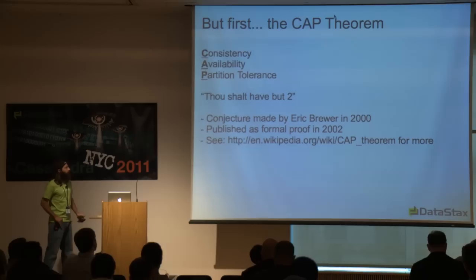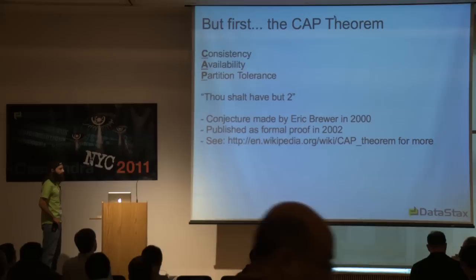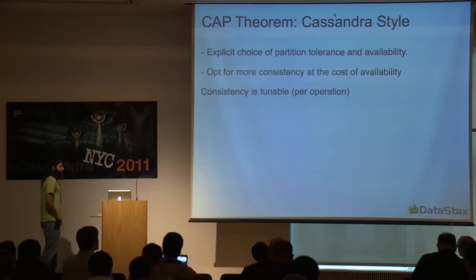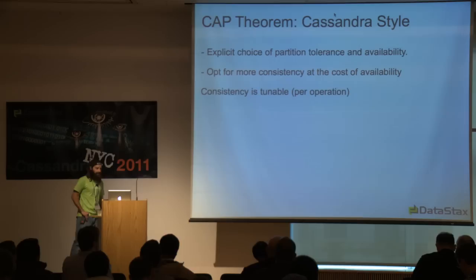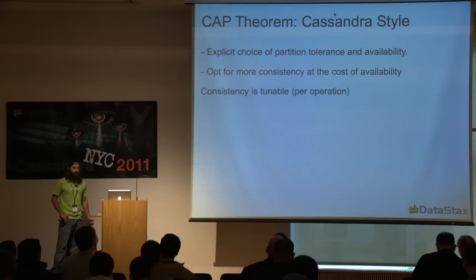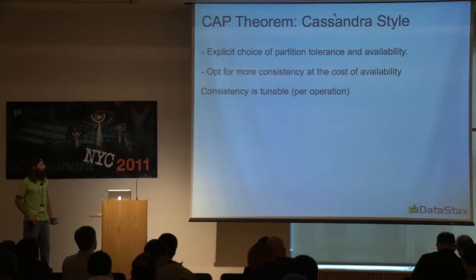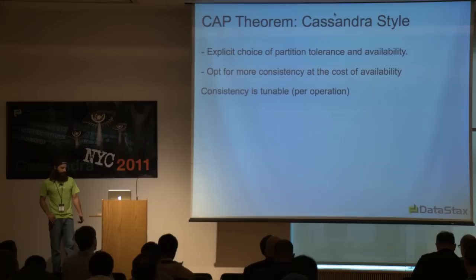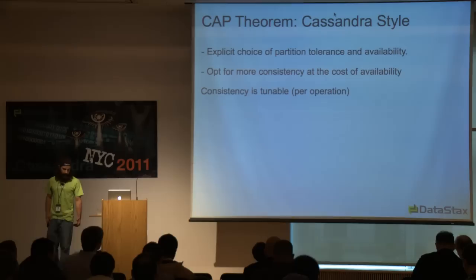For example, you can't have a high degree of availability and respond to requests quickly if you have multiple data centers, because of the speed of light. There's just some physics that's not going to work. Cassandra has explicitly made the choice of partition tolerance and availability, with the ability to opt for more consistency at the cost of availability. You can tune consistency per operation — with every operation through the API, you can say I want stronger consistency or I want more availability, a higher response time or a more accurate read.